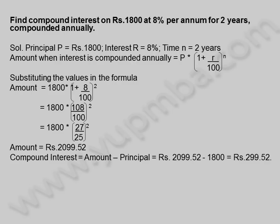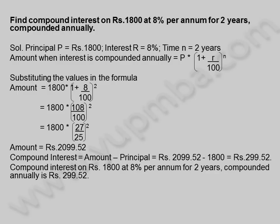Compound interest is equal to amount minus principal is equal to 2,099.52 rupees minus 1,800 rupees is equal to 299.52 rupees. Compound interest on 1,800 rupees at 8 percentage per annum for 2 years compounded annually is 299.52 rupees. Let us see another example.